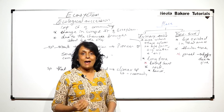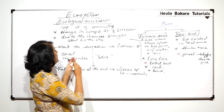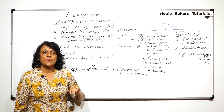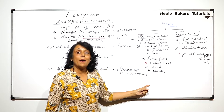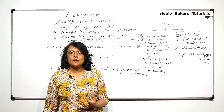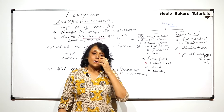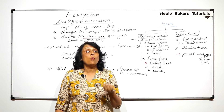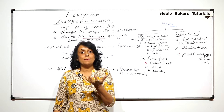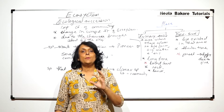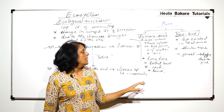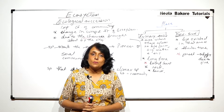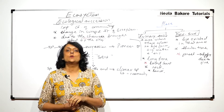We need to understand what changes occur during succession. Let us take the example of primary succession: a volcanic eruption takes place, lava cools, and on that surface succession starts. On that cooled lava there is no organic matter, no soil, and therefore no water-holding capacity. The organisms that can establish themselves there are lichens — specifically crustose lichens — which do not require soil and can absorb moisture directly from the atmosphere.